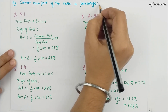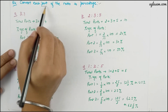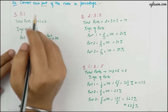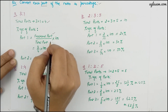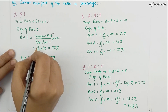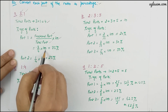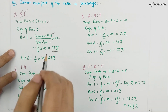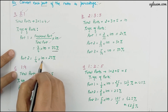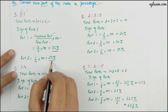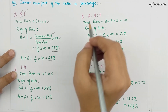Question 2 asks us to convert each part of a ratio to a percentage. For ratio 3:1, the total parts are 3 plus 1, which is 4. Percentage of first part is 3 divided by 4 multiplied by 100, giving 75 percent. Percentage of second part is 1 divided by 4 multiplied by 100, giving 25 percent.